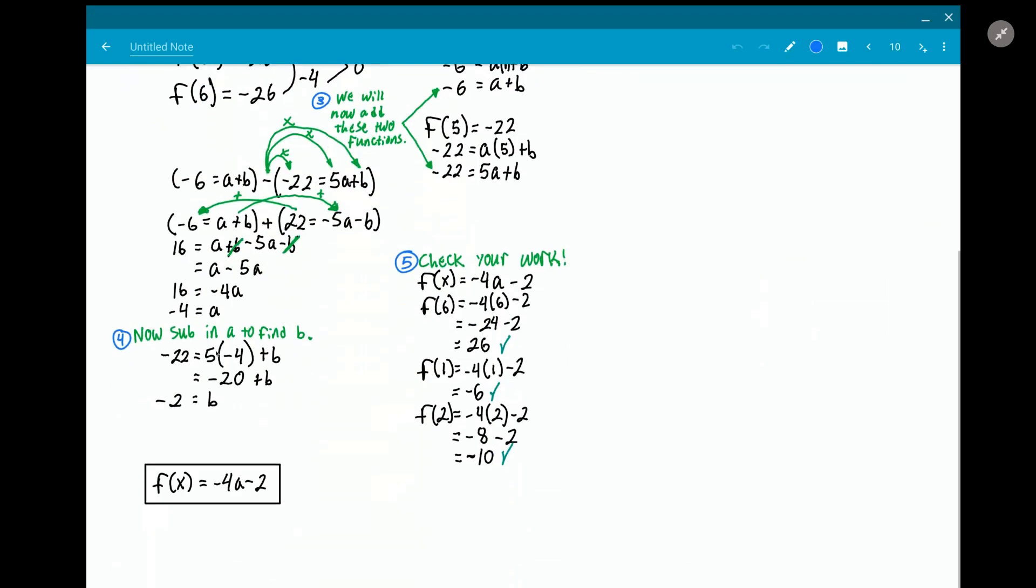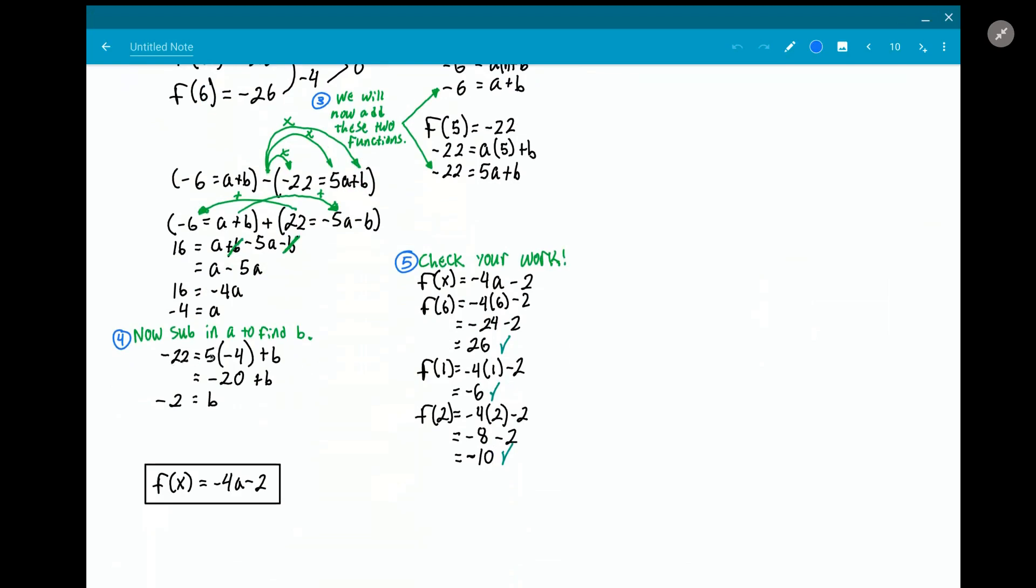Now we know that at -22 from this equation, that at f(5)... So -22 is equal to 5 times -4 plus b. And you solve for b, you get -2. And then we get our function: f(x) is equal to -4x - 2.